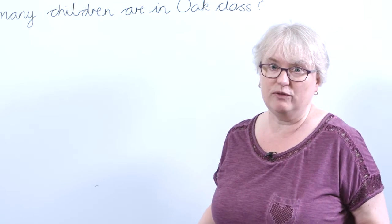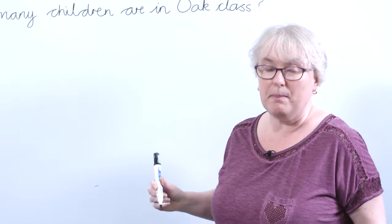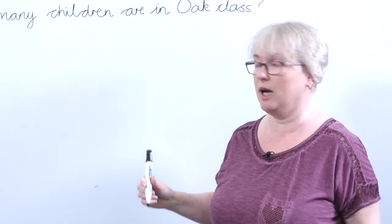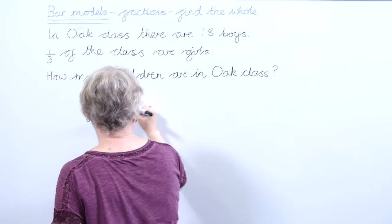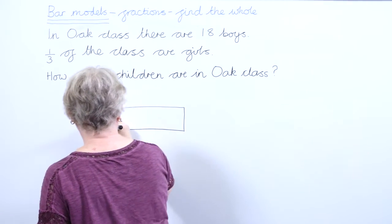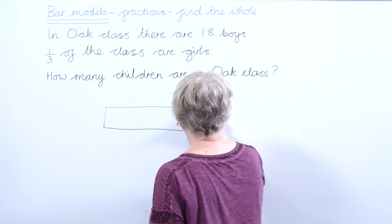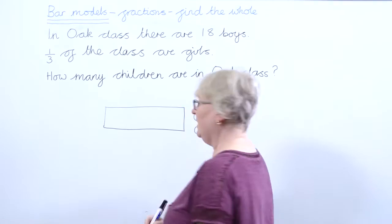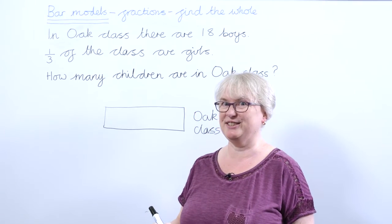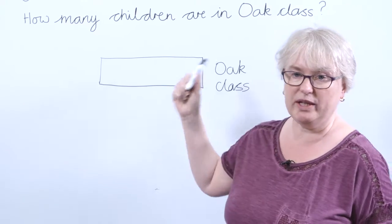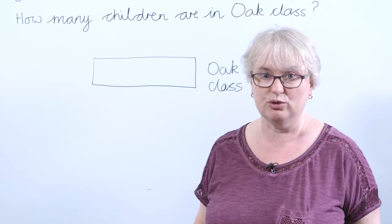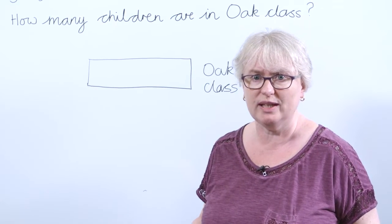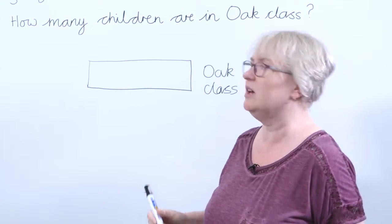It sounds confusing when you first look at it, but let's start by drawing a bar model to represent Oak class. I'm going to label that 'Oak class.' I always teach children to go back and look at the question — keep checking you've got all the information that you need.